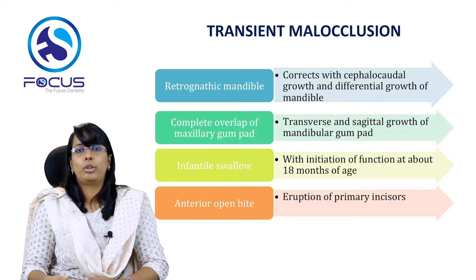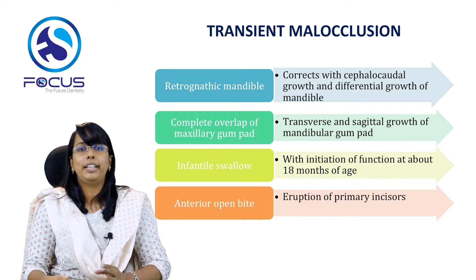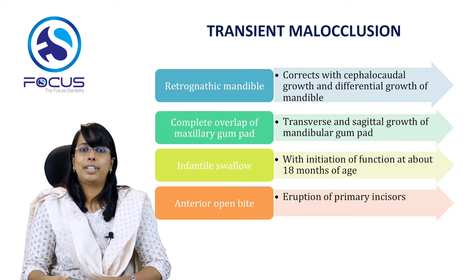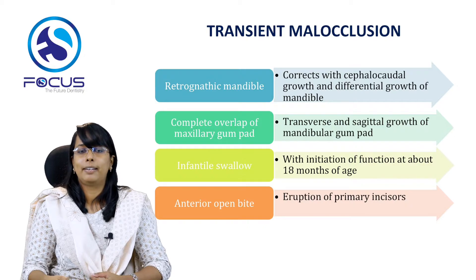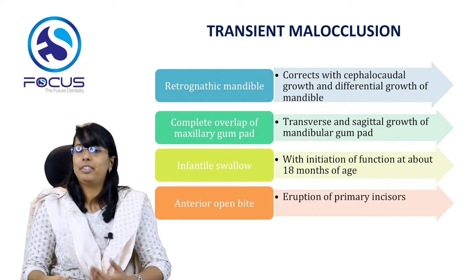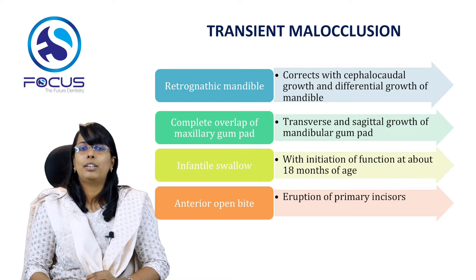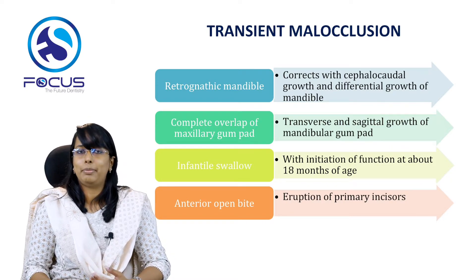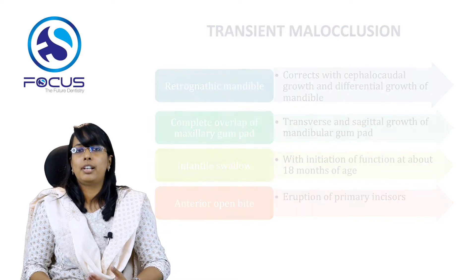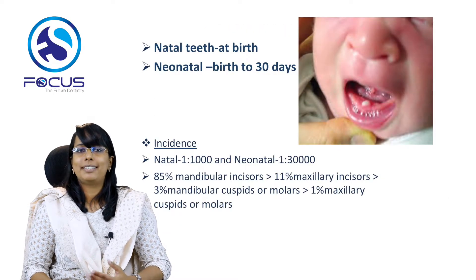The second transient malocclusion is complete overlap of the maxillary gum pads, with a complete overjet all around, which is self-correcting through transverse and sagittal growth of the mandibular gum pad. The third is the infantile swallow, which corrects with initiation of function at about 18 months of age. The fourth is an anterior open bite, where contact occurs only in the posterior region, and this corrects with eruption of the primary incisors.